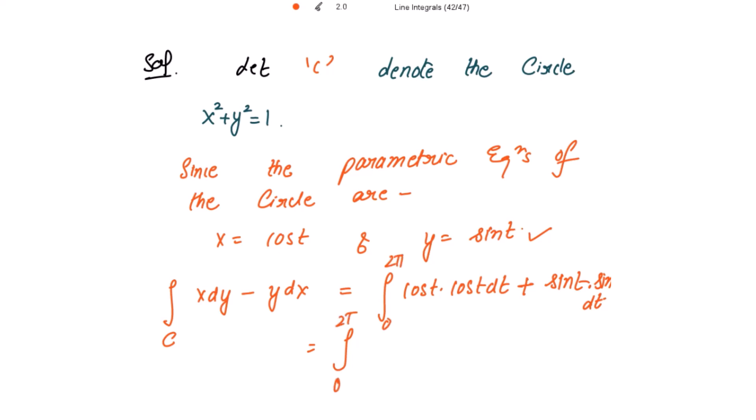So this is from 0 to 2π, cos squared t plus sin squared t dt. And cos squared t plus sin squared t is 1.